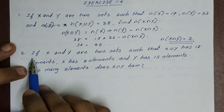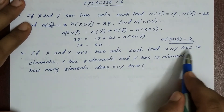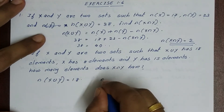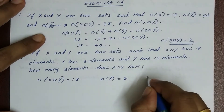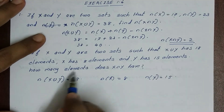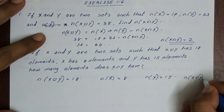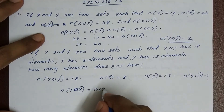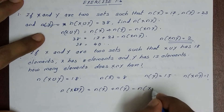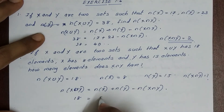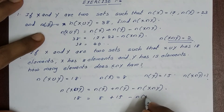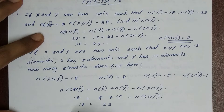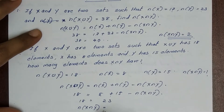Next, second question: if X and Y are two sets such that X union Y has 18 elements, X has 8 elements, and Y has 15 elements, how many elements does X intersection Y have? The number of elements in X intersection Y equals 8 plus 15 minus 18, which is 23 minus 18, that is 5.